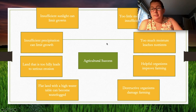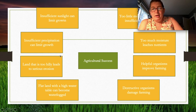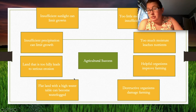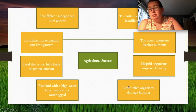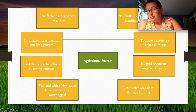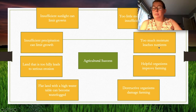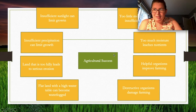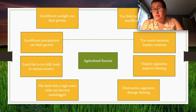You need helpful organisms and must avoid destructive pests. Too much or too little moisture and poor soil also limit farming. A lot of things need to go right to farm successfully — many people think farming is easy, just putting a seed in the ground, but it's actually quite difficult.